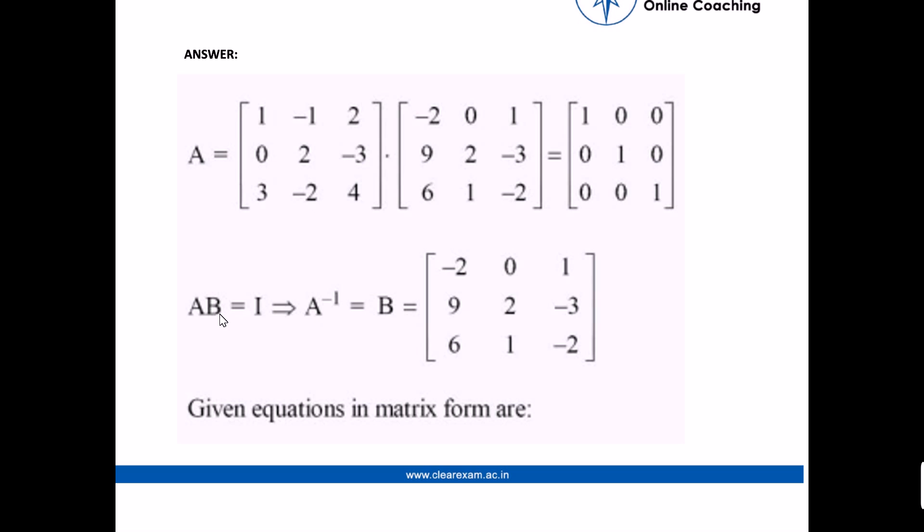As we know A times B equals identity matrix, which means A inverse equals B. So we can write it as [-2, 0, 1; 9, 2, -3; 6, 1, -2]. Given equations in matrix form are: